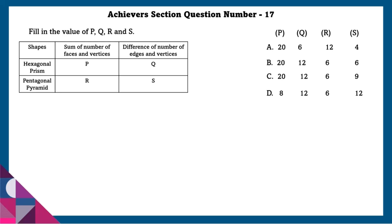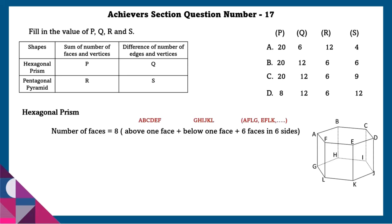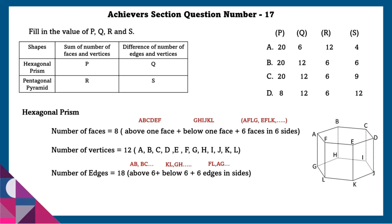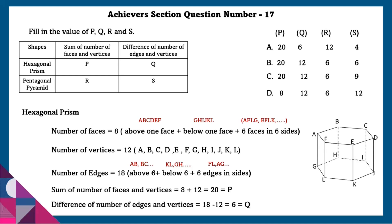Achiever section question number 17: Find the values of P, Q, R, and S. In a hexagonal prism, number of faces equals 8 (top face plus bottom face plus 6 side faces). Number of vertices equals 12. Number of edges equals 18 (top 6 plus bottom 6 plus 6 side edges). Sum of faces and vertices equals 8 plus 12 equals 20, that is P. Difference of edges and vertices equals 18 minus 12 equals 6, that is Q.